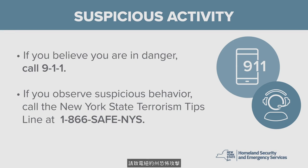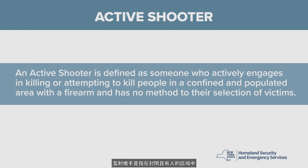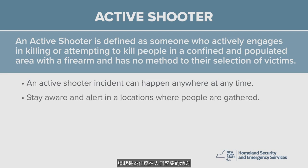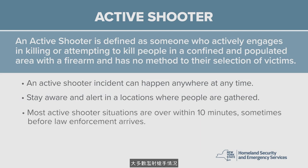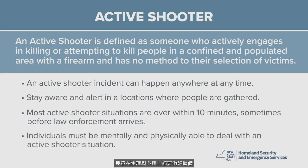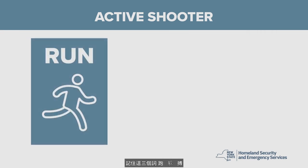An active shooter is defined as someone who actively engages in killing or attempting to kill people in a confined and populated area with a firearm, with no method to their selection of victims. An active shooter incident can happen anywhere at any time, so it's important to stay aware and alert wherever people are gathered — shopping centers, hospitals, office buildings, clubs, restaurants, schools, fairs or festivals, or houses of worship. Most active shooter situations are over within 10 minutes, sometimes before law enforcement arrives. Remember these three words: run, hide, fight.